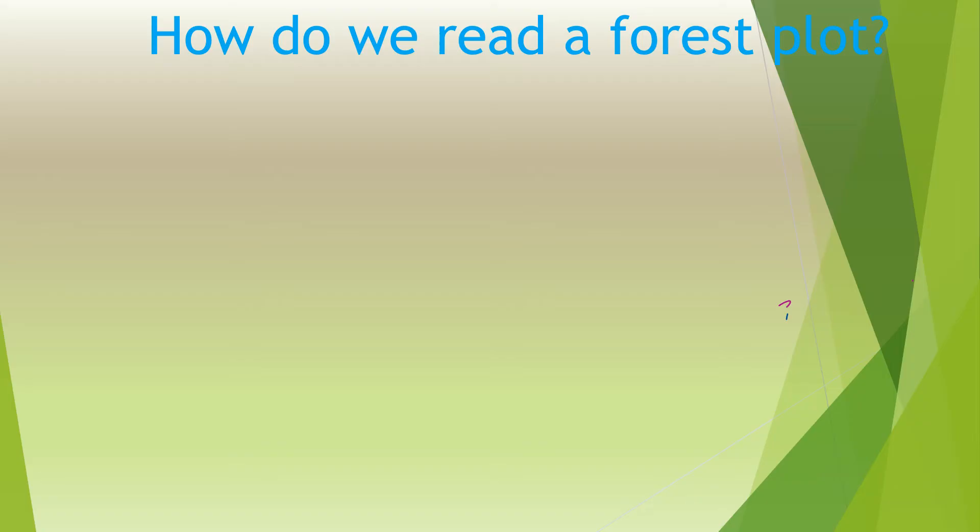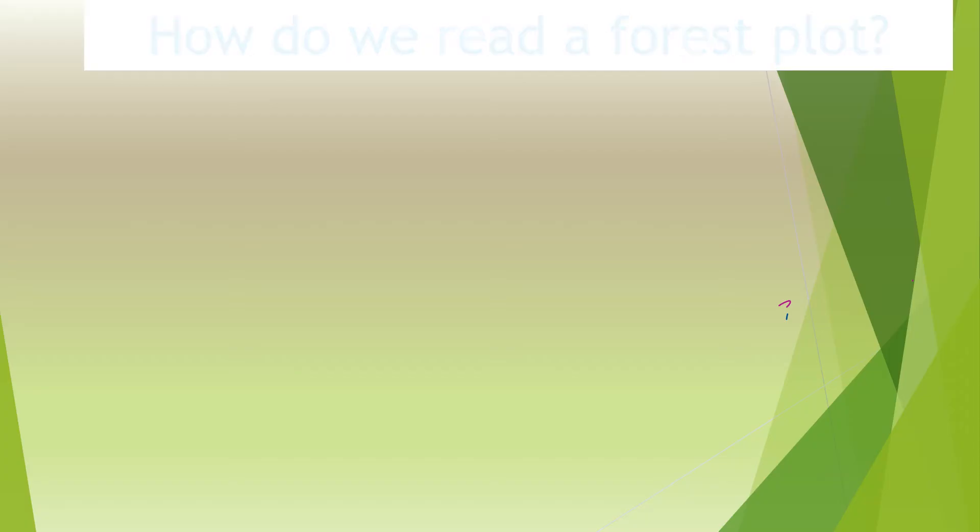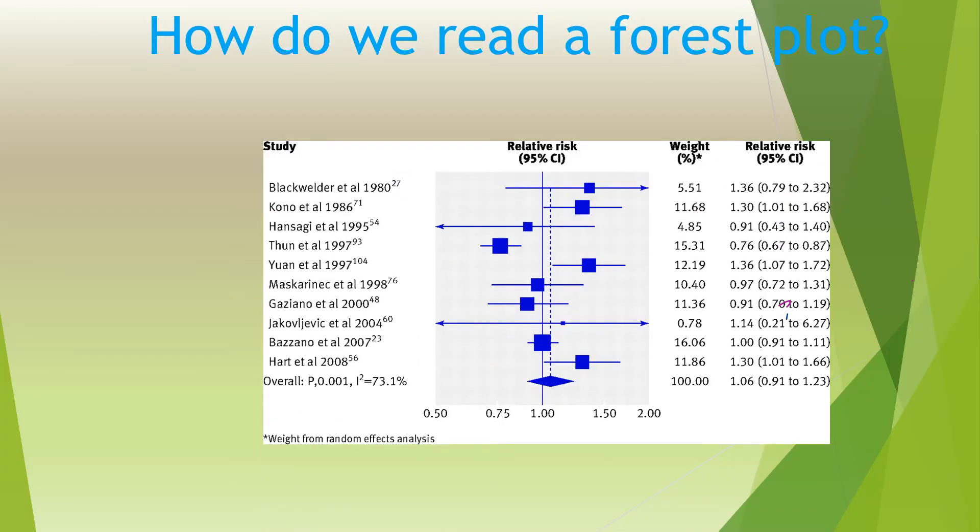So, how do we read a forest plot? The relative risk ratio, 95% confidence interval, visually displays the study results. This column displays the same results expressed numerically. The horizontal lines through the boxes illustrate the length of the confidence interval. The longer the lines, the wider the confidence interval, and as such, the less reliable the results are.